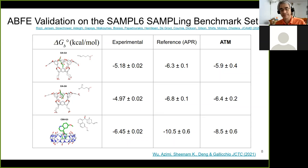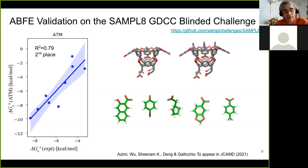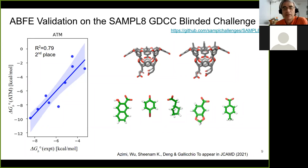Without going into many details, the test was successful and we recently published. That gave us a lot of confidence that the method was working. We then more recently validated the method on a blinded challenge set — the SAMPL8 DCC set. The game here was to reproduce the experiments; we didn't know the experimental values while doing the calculations. We did very well: we had 79% correlation, which gave us second place — second only to Jay Ponder with AMOEBA. We used a simpler potential, GAFF, so it's not a bad place to be. That gave us additional confidence that the method was working in an unbiased way.